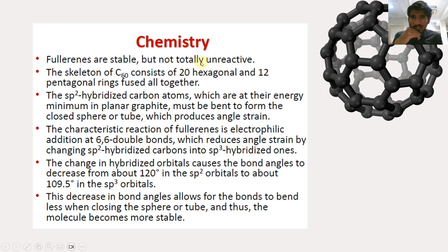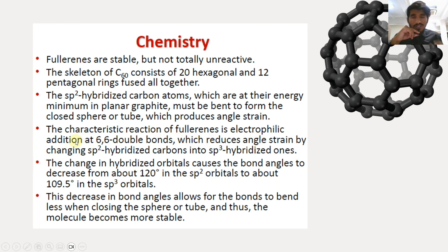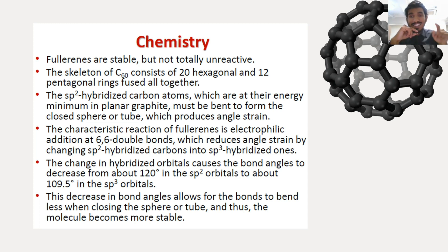Moving on to the chemistry of buckminsterfullerene: fullerenes are stable but not totally unreactive. The skeleton of C60 consists of 20 hexagonal and 12 pentagonal rings. Each carbon atom forms only three bonds, giving sp2 hybridization, which introduces some angle strain. The characteristic reaction of fullerene is electrophilic addition at the 6-6 double bonds, which reduces the angle strain by converting the sp2 hybridized atoms into sp3 hybridized ones.